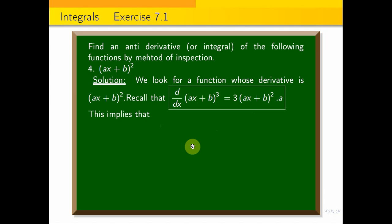So from this, (ax + b)² = 1/(3a) · d/dx of (ax + b)³. Or, I can write this equation as d/dx of [1/(3a) · (ax + b)³].